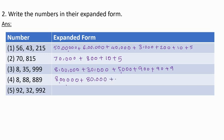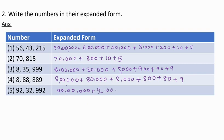The answer is 8 lakh plus 80,000 plus 8,000 plus 800 plus 80 plus 9. Next number: 92,32,992. The answer is 90 lakh plus 2 lakh plus 30,000 plus 2,000 plus 900 plus 90 plus 2.